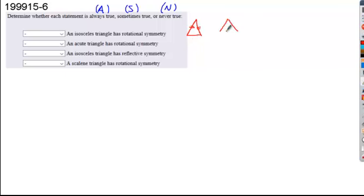But what if we drew it in this way? This is also an isosceles triangle. It's both isosceles and equilateral. Does it have rotational symmetry? Yes, so this would be sometimes.